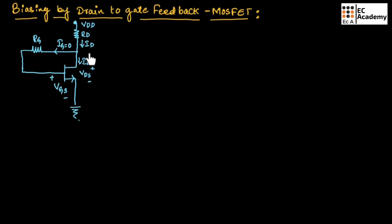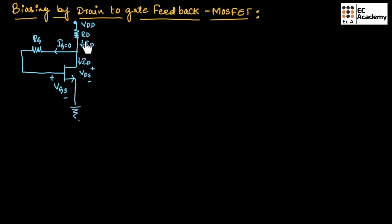This is the circuit for biasing by drain to gate feedback. In this circuit, as you can see, a resistor is connected between the drain terminal and gate terminal. This resistor is known as the feedback resistor. Here, RD is the output resistance or drain resistance, and RG is the feedback resistor.